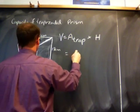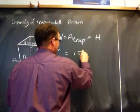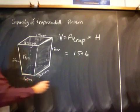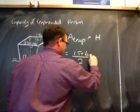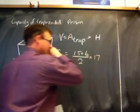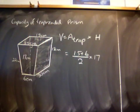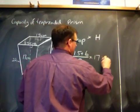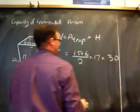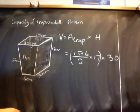The area of the trapezoid is going to be 15 plus 6, that's my two bases, averaged, so you divide by 2, times the height of the trapezoid, and then multiply by the height of the prism. If you want to put that in brackets to clarify what you're doing, it's a great idea.